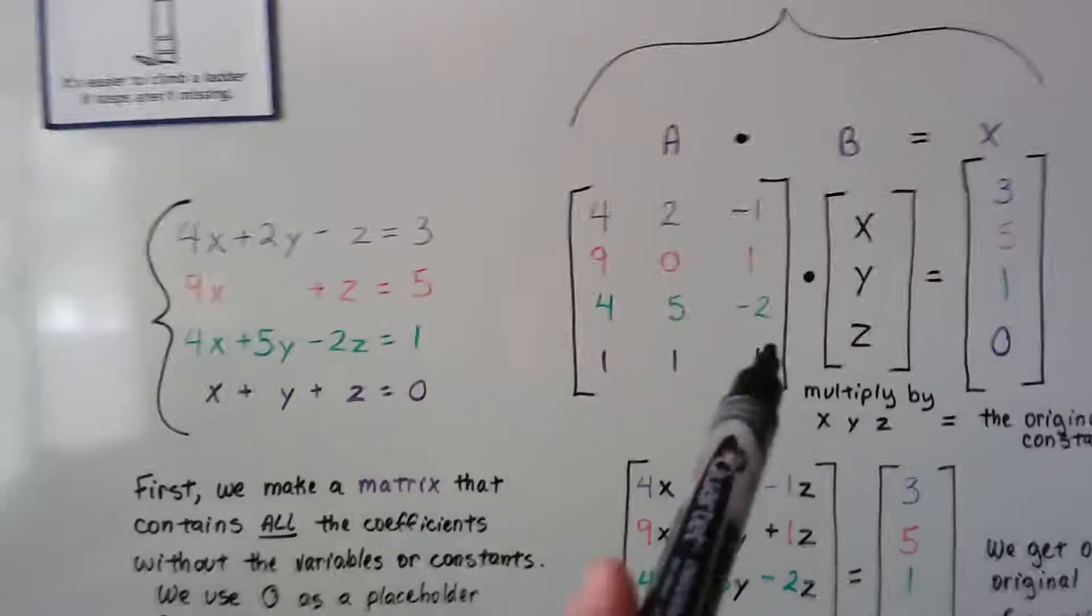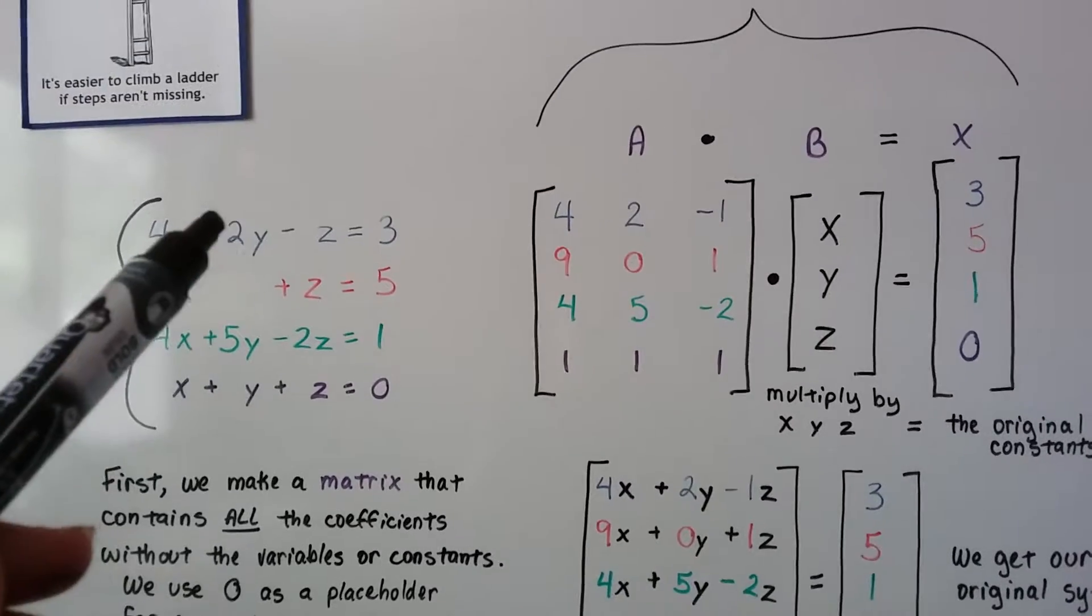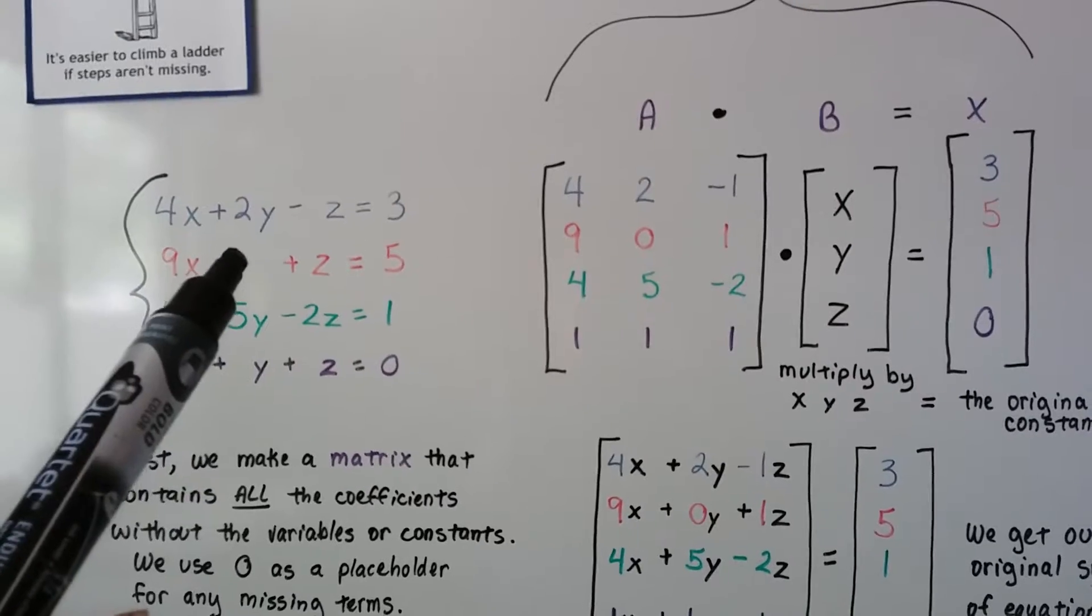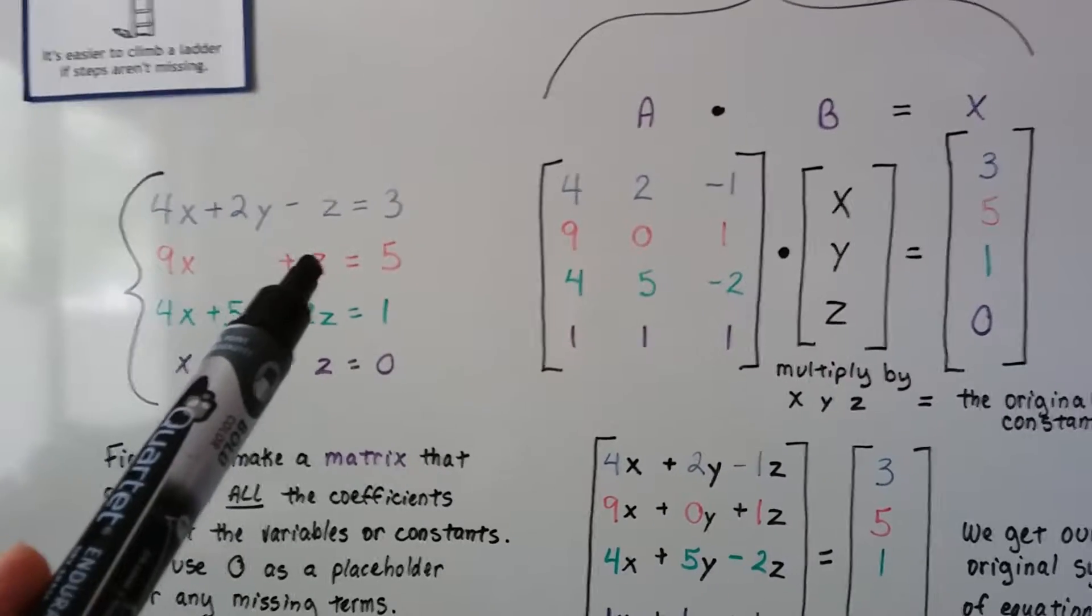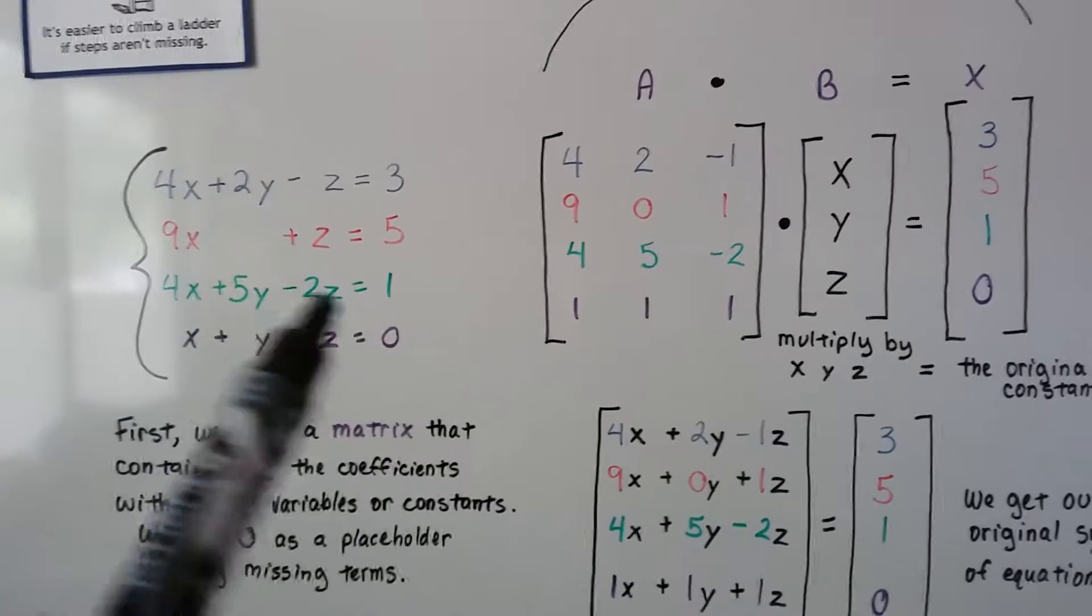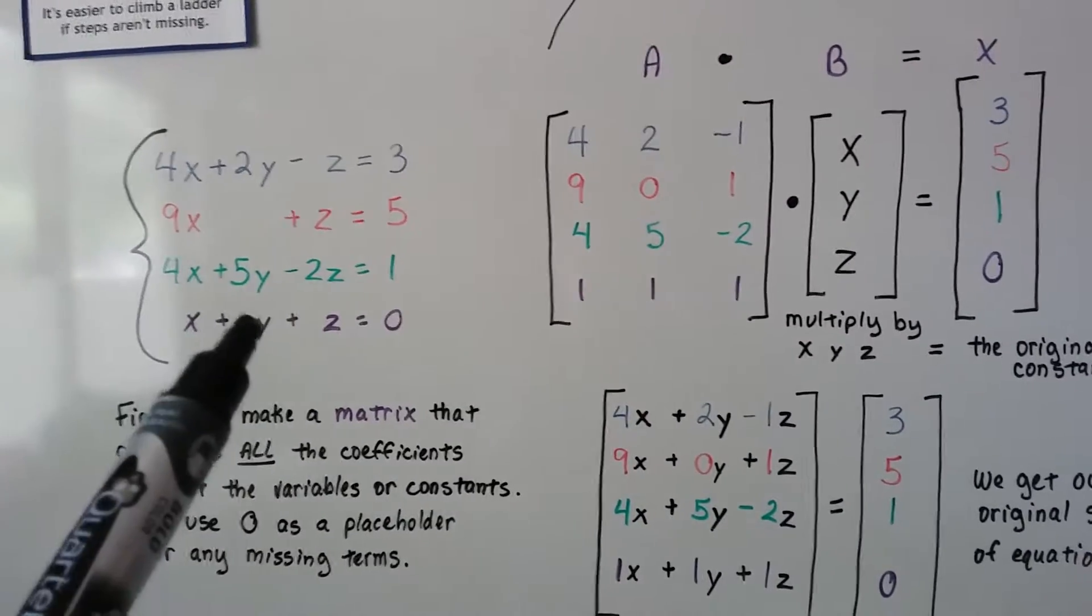So this would be our equation. We've got a 4, a 2, and a negative 1. We've got a 9 and then a 0 for the y value and then a 1 for the z. We've got a 4, a 5, and a negative 2. We have a 1, a 1, and a 1.